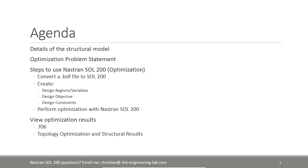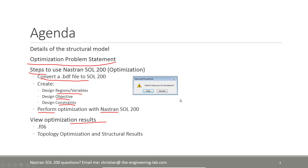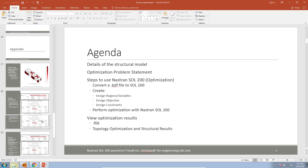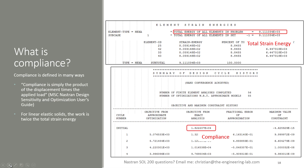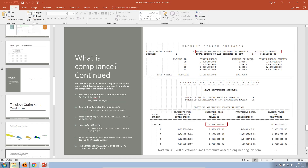Here's a quick agenda. I'll give you some information regarding how this structure is loaded, then talk about the optimization problem statement — a summary of design regions, the objective, and constraints. This is very critical to have summarized before starting. Then we'll go through each step to convert your original BDF file to Solution 200, perform the optimization with Nastran, and review the results. For new users of topology optimization, I'll also go over some common questions and key terminology at the end.